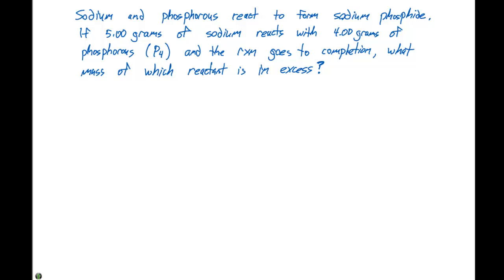The last problem we are going to perform from this section of the text kind of combines a bunch of things and even taps back into what we talked about with chapter 2 with nomenclature. The problem reads as follows: Sodium and phosphorus react to form sodium phosphide. If 5.00 grams of sodium reacts with 4.00 grams of phosphorus, which in this case is P4, and the reaction goes to completion, what mass of which reactant is in excess?